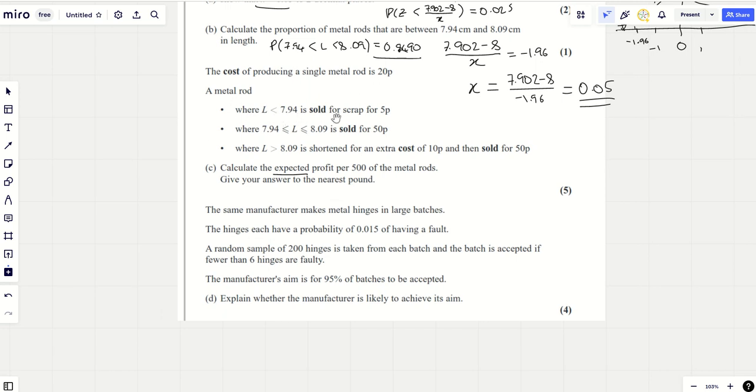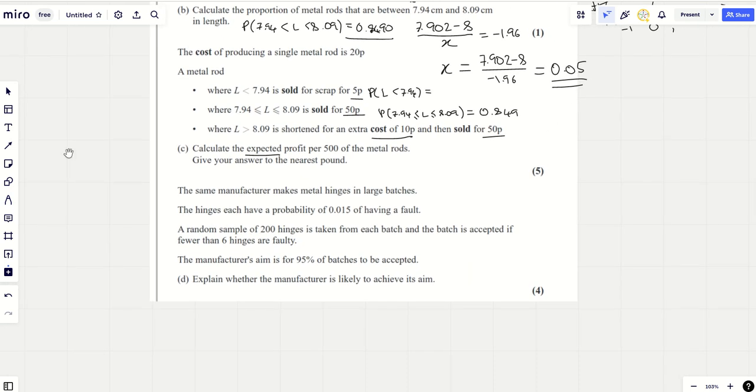The cost of producing a single metal rod is 20p. A metal rod where L is less than 7.94 is sold for scrap. 7.94 to 8.09 is sold for 50p. If it's greater than 8.09, it costs 10 more p and it's then sold for 50p. Calculate the expected profit per 500 of the metal rods. So we need to know all these values, the probability that L is less than 7.94.